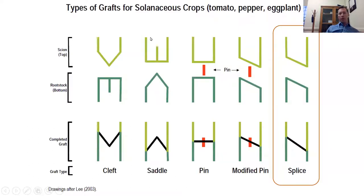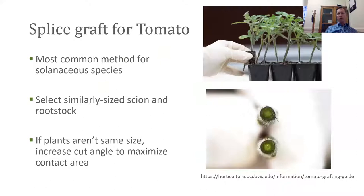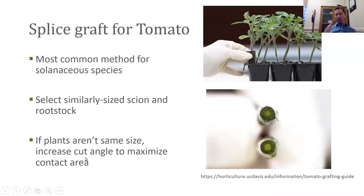There are different methods for grafting solanaceous plants, but we're going to use the splice graft — this is what I recommend, though I'll note it's personal preference; there are other ways to do it. For splice grafting tomatoes, this is the most common method used for all solanaceous species. It is important that we have a similarly-sized scion and rootstock — we need to match these diameters up as well as we can. If they don't match perfectly, we can increase the angle of the cut to give more surface area to help heal the graft.